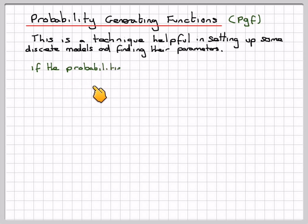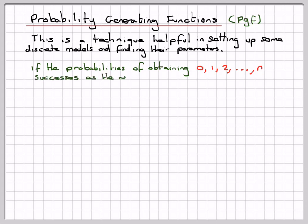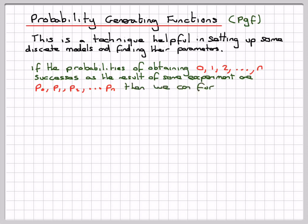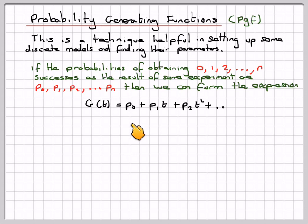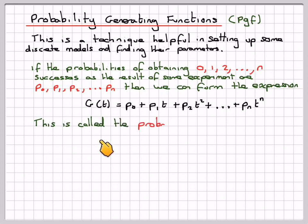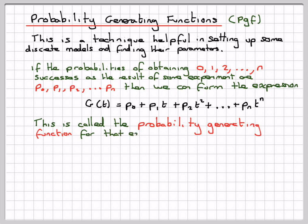If the probability of obtaining 0, 1, 2, up to n discrete values — successes as a result of some experiment — are P0, P1, P2, ..., Pn, then we can form the expression G(T) = P0 + P1·T + P2·T² + ... + Pn·Tⁿ. This is called the probability generating function for that experiment.